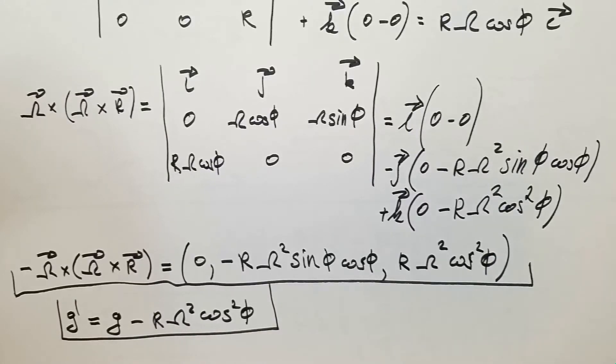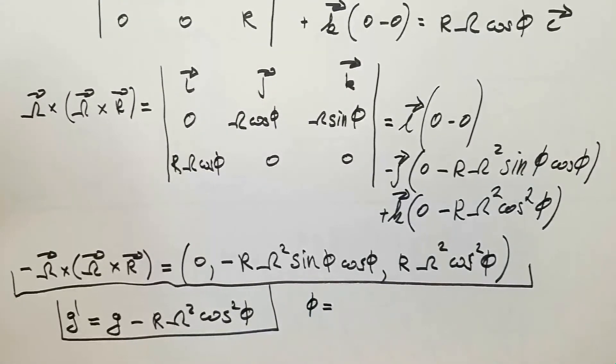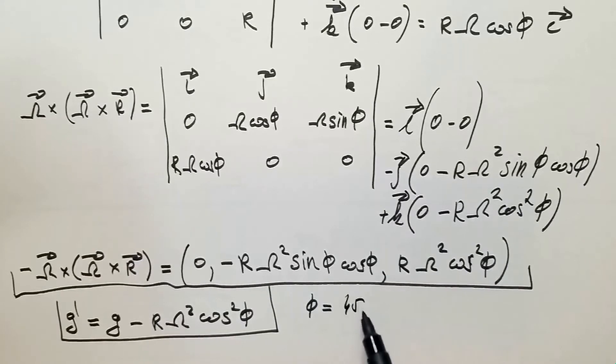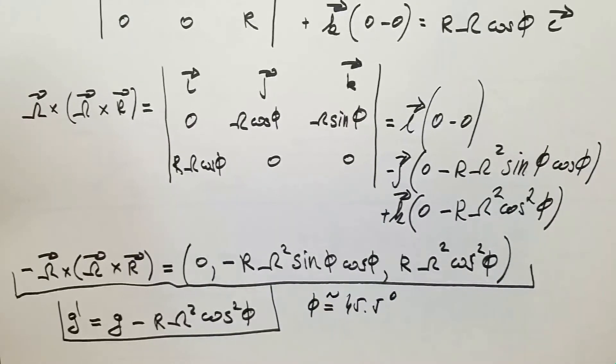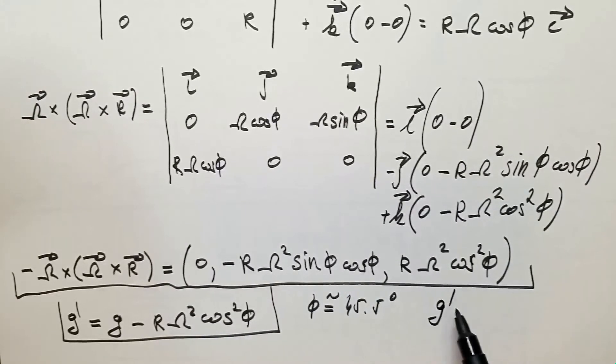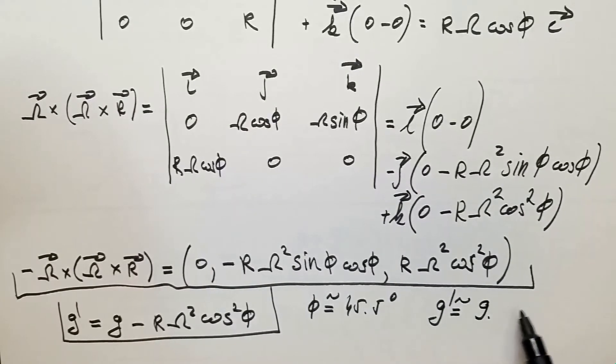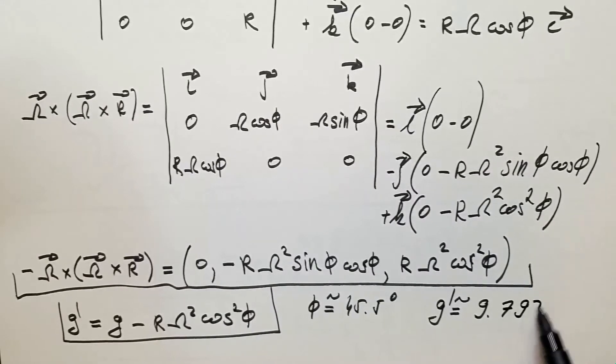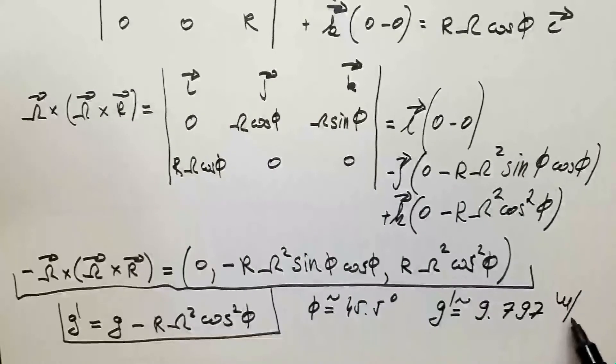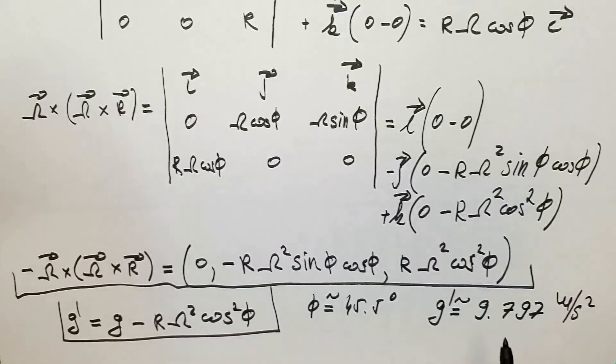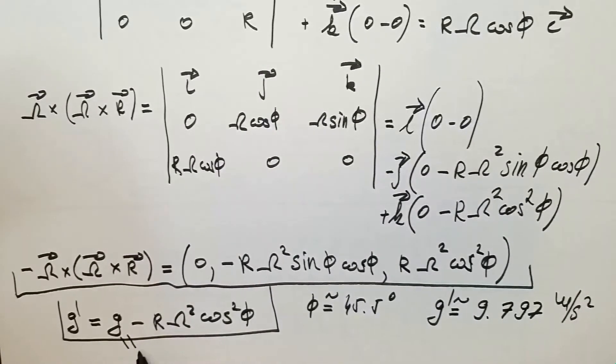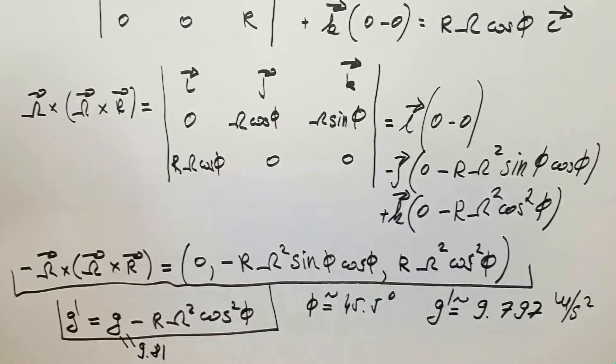For example, I live in Montreal where the latitude is 45.5 degrees approximately, and then the apparent gravity G prime is approximately 9.797 meters per second squared, which is basically again 9.8, which is the value that we always use in our calculations because this G, remember, is 9.81, the classical value that we use.